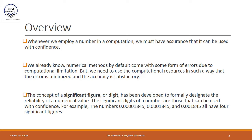Before diving into numerical errors, we need to define what significant figures means. Significant figures have been developed to formally designate the reliability of a numerical value. For example, numbers like 0.00001845, 0.0001845, and 0.001845 all have four significant figures. Significant figures denote the most significant non-zero digits. All three numbers have an equal number of significant digits, and significant digits are those numbers that can be used with full confidence.